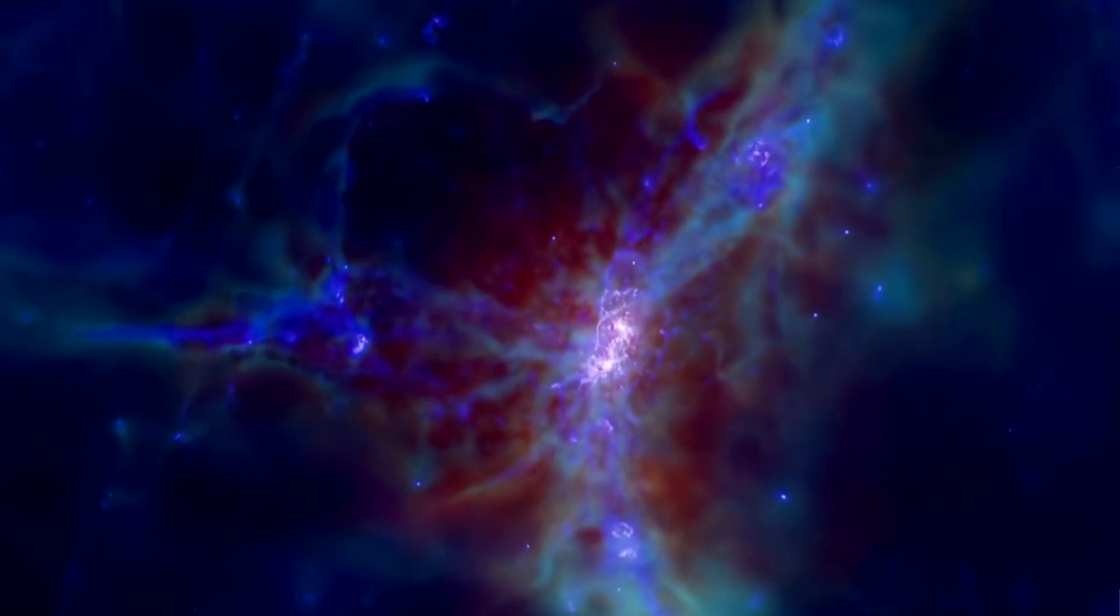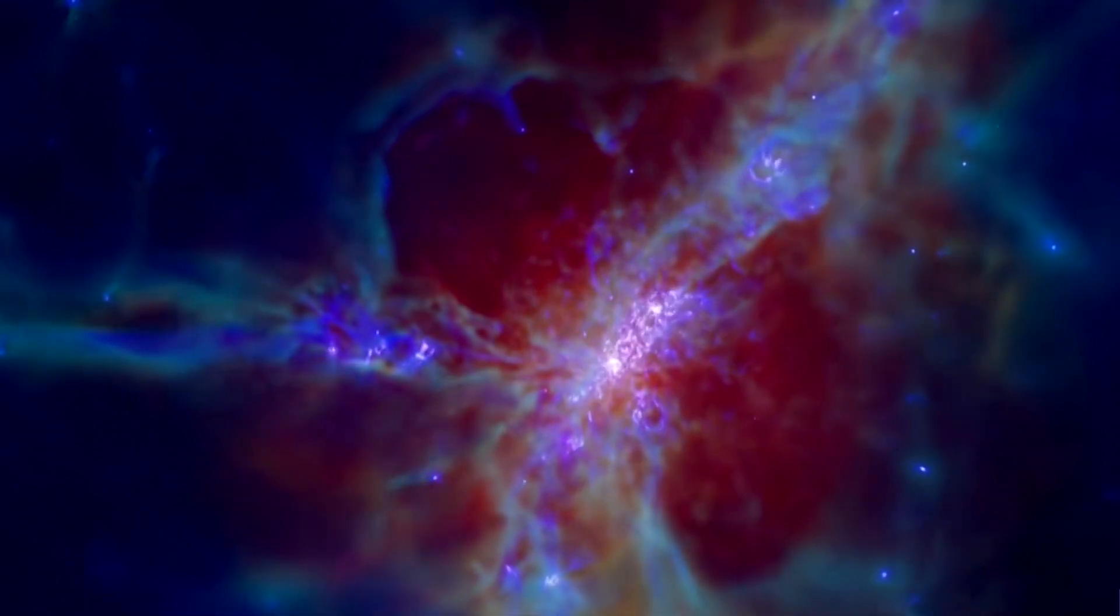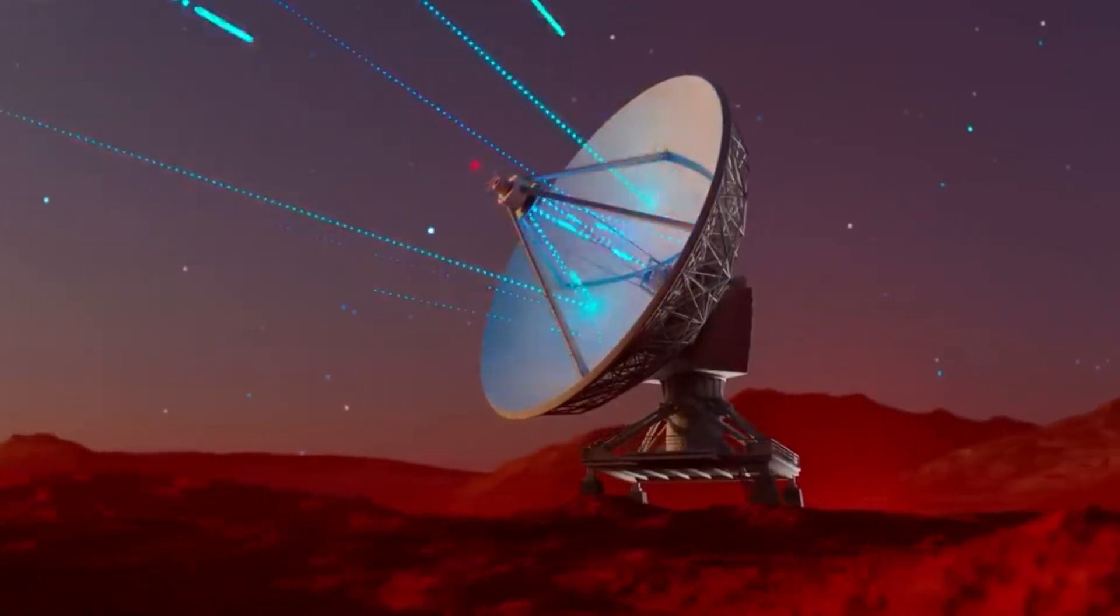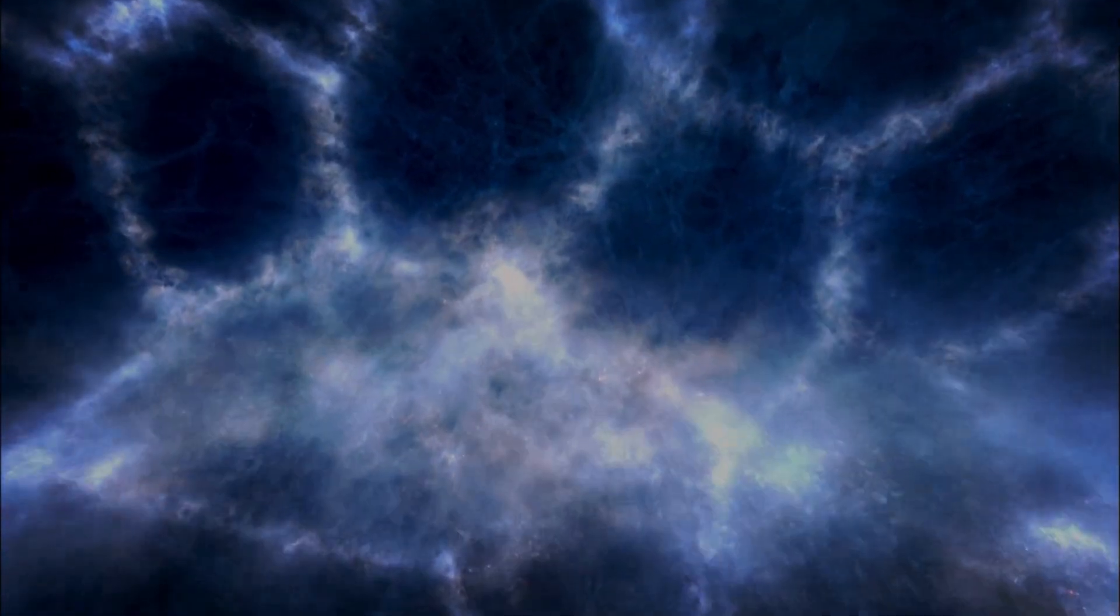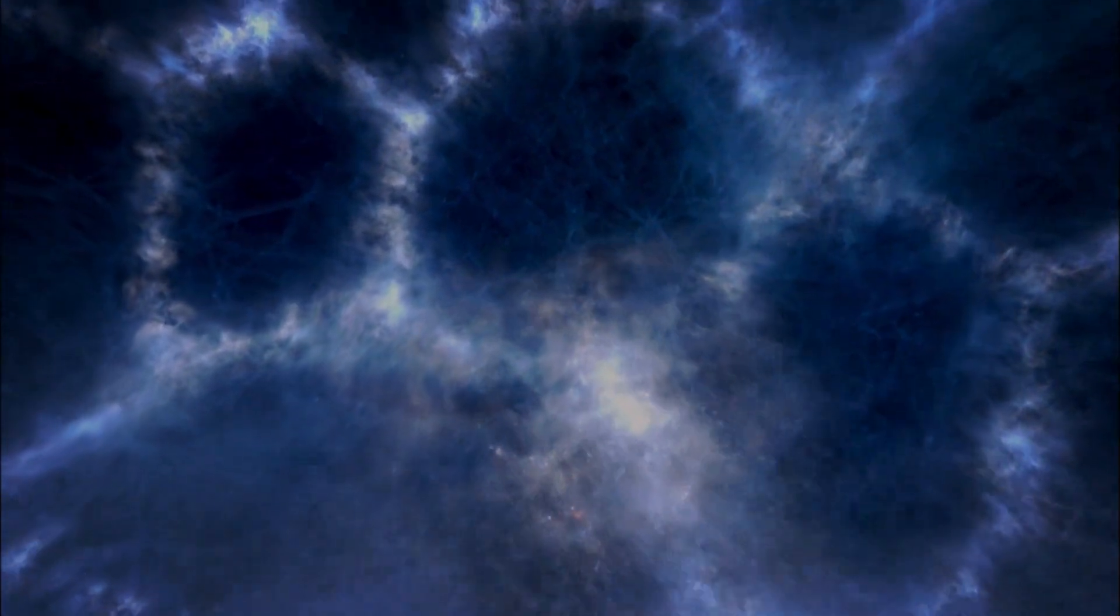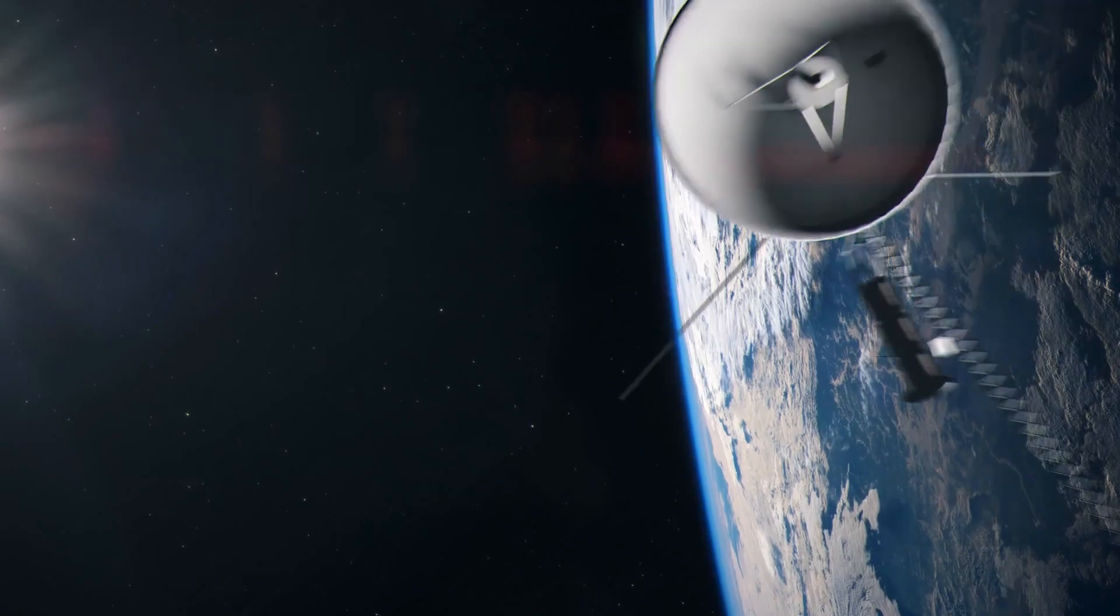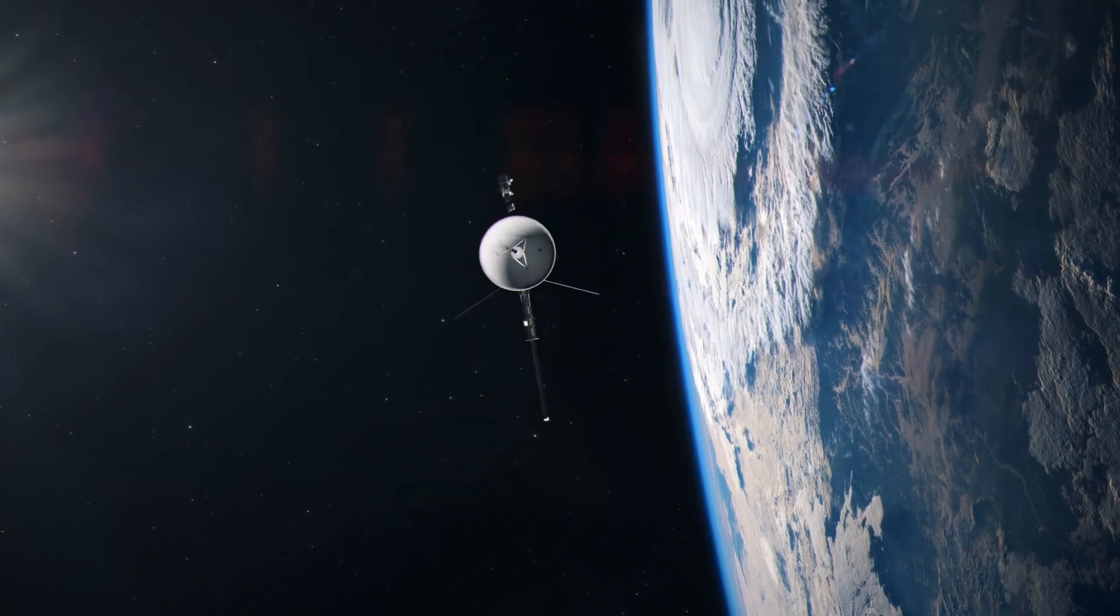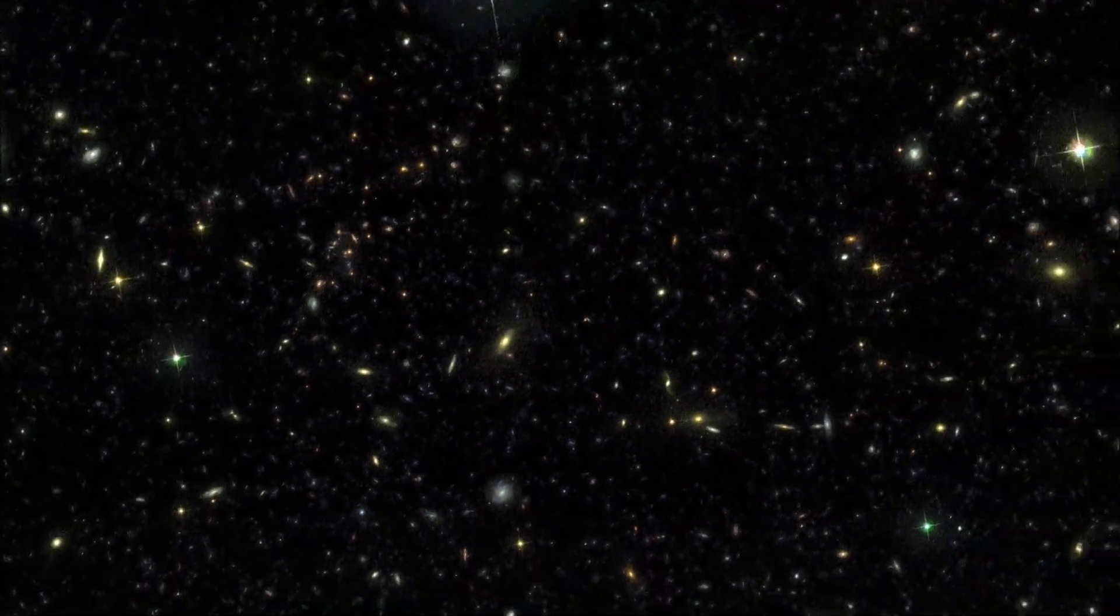Dark matter, true to its name, is a mysterious form of matter that lacks the ability to emit, absorb or reflect light, rendering it invisible to conventional telescopes. Its existence is inferred through its gravitational influence on visible matter and the movements of galaxies and galaxy clusters. The observations made by Voyager have played a vital role in advancing our understanding of this elusive cosmic component.